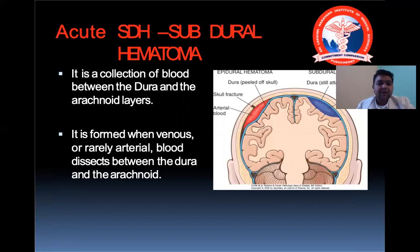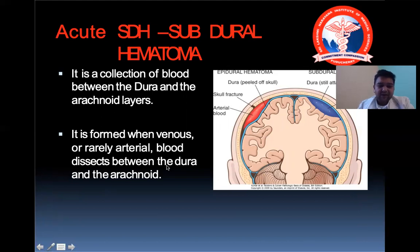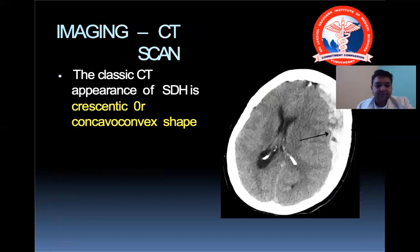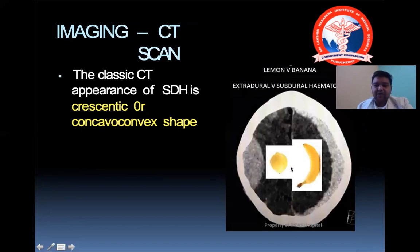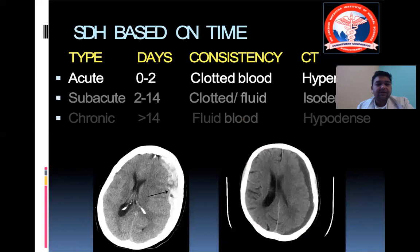Acute subdural hematoma occurs under the dura — between the dura and the brain matter. It is formed when venous or rarely arterial blood dissects between the dura and the arachnoid. The classic CT appearance is a crescentic or concavoconvex lesion. A useful mnemonic: think of EDH like a lemon (biconvex) and SDH like a banana (concave).